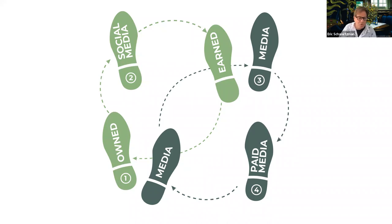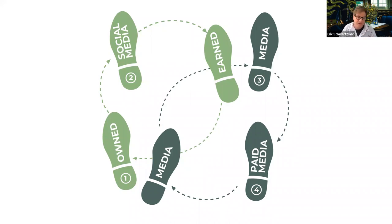The logical order for leading a digital pivot starts with owned media before social media, social media before earned media, and earned media before paid media. But what exactly is earned, shared, owned, and paid media — and why are these distinctions useful?